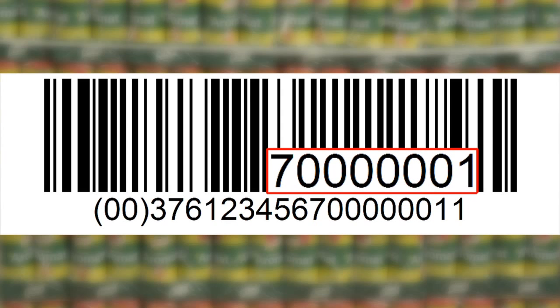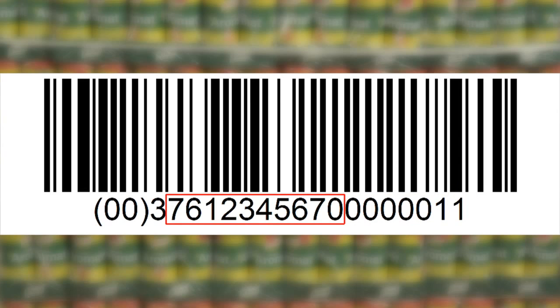GS1 company prefixes vary in length, generally from 7 to 10 digits. If your GS1 company prefix is 8 digits in length, you will have 8 digits to sequentially number your logistic units. If your GS1 company prefix is 10 digits in length, you would have 6 digits to sequentially number your logistic units.